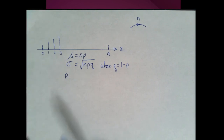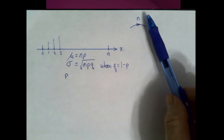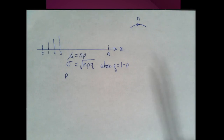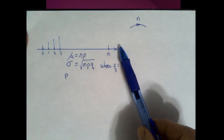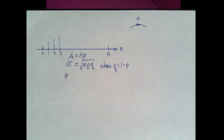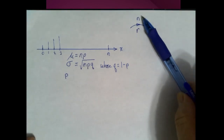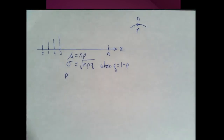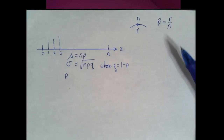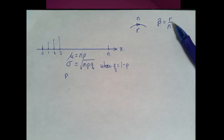Generally, we don't know this population proportion. We're going to try to understand it by taking a sample of size n. When we do that, this binomial probability distribution exists, even though we can't fully construct it. We take a sample of size n, observe r successes, and therefore calculate the sample proportion p-hat as r divided by n.